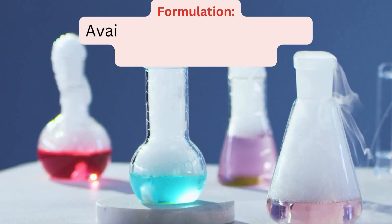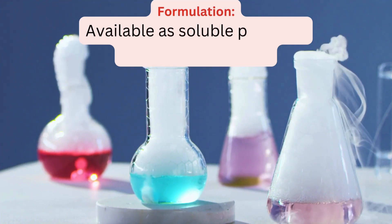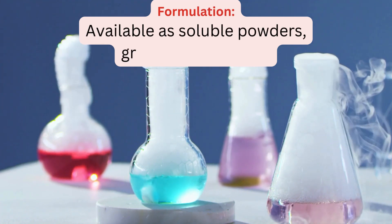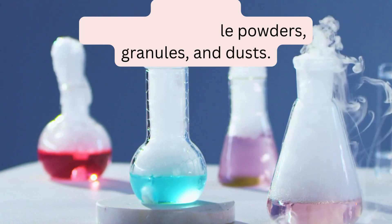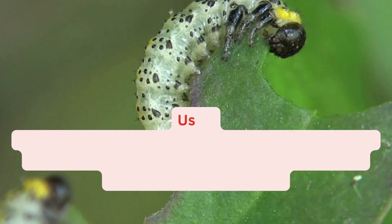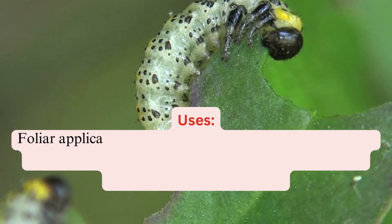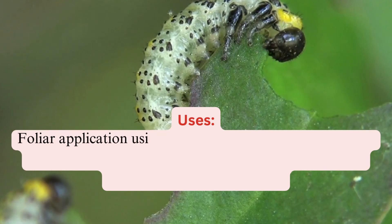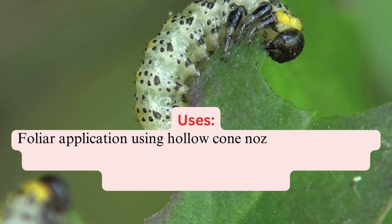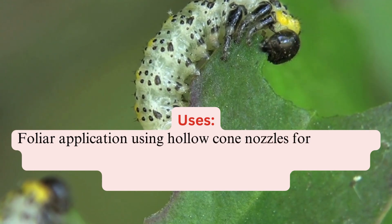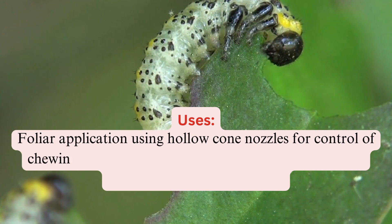Formulation. Acephate is commonly available in formulations such as soluble powders, granules, and dusts. Acephate is applied foliarly using hollow cone nozzles to control a wide range of chewing and sucking insects.